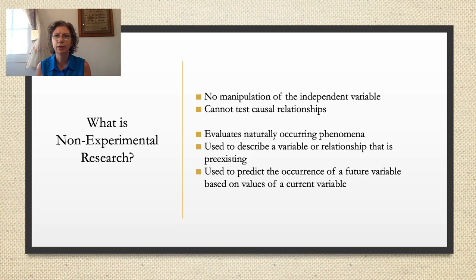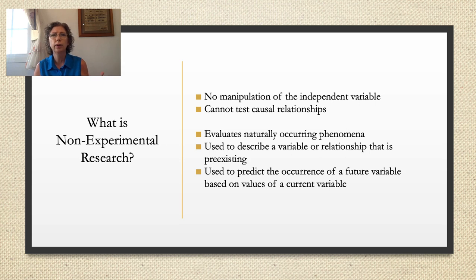What is non-experimental research? Recall in our prior chapter that experimental research was appropriate when the researcher has a specific research question or hypothesis about a causal relationship between two variables, and that it's possible, feasible, and ethical to manipulate the independent variable and control the extraneous variables by either randomly assigning participants to conditions in between-subjects experiments, or randomly ordering the sequences of conditions in within-subjects experiments.